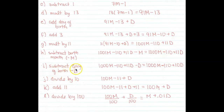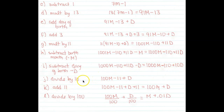Next, subtract the day of birth — that's minus d. I have 11d and I subtract 1d, giving me 10d. Now divide everything by 10: 1000m divided by 10 gives 100m, minus 110 divided by 10 gives minus 11, and 10d divided by 10 gives d.